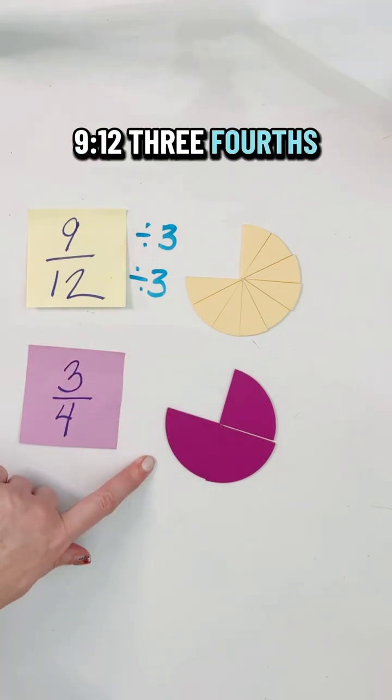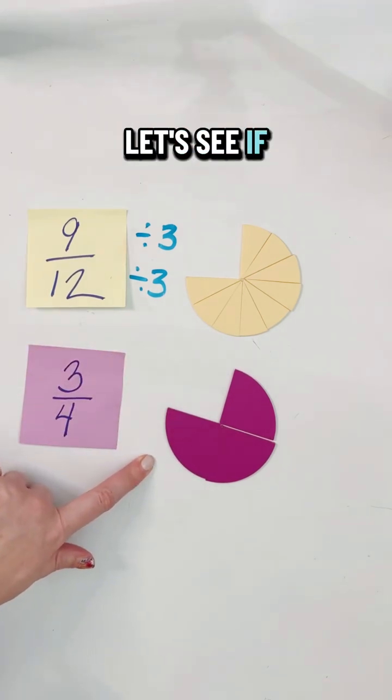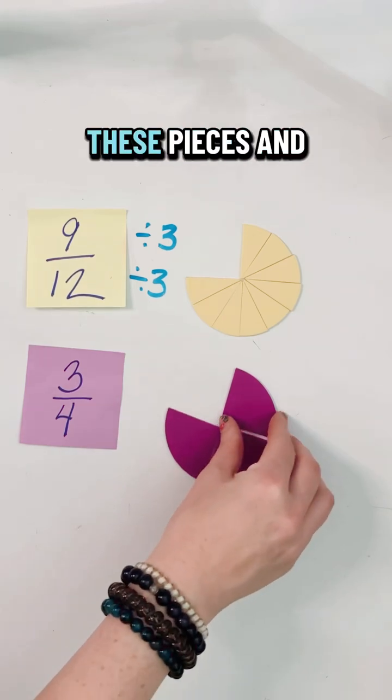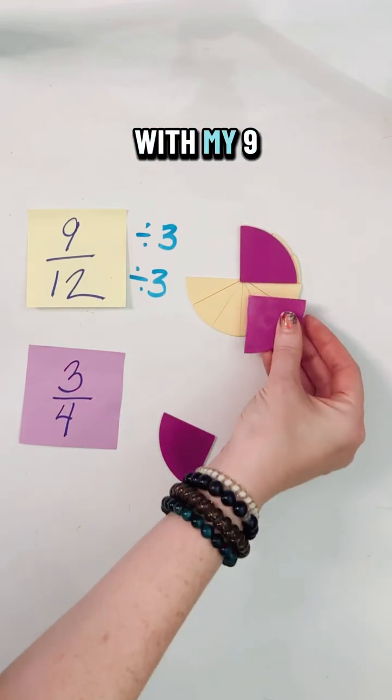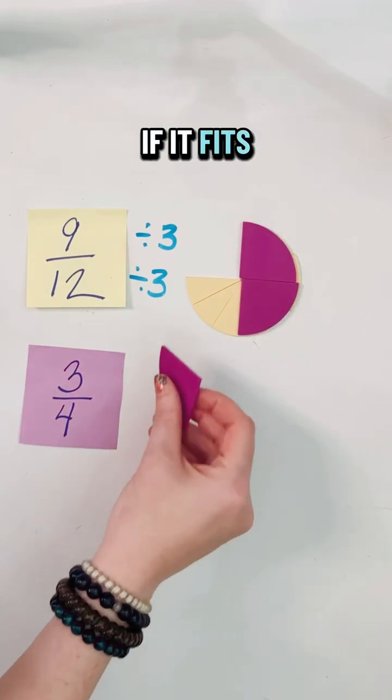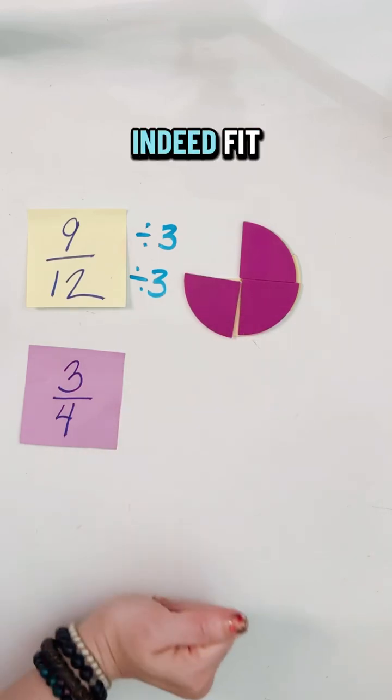Nine twelfths, three fourths—it looks pretty good. Let's see if they actually match up. I can take these pieces and match them up with my nine twelfths to see if it fits. And it does indeed fit.